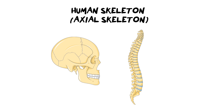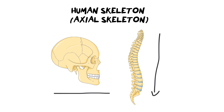We're focusing in today's video on the axial skeleton and the two major components of the axial skeleton are the skull as well as the vertebral column. I'm going to go through all of the bones you need to know, how to tell the difference between them, as well as how to label a skeleton if you were to get one in an exam.